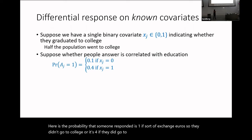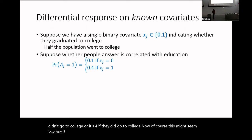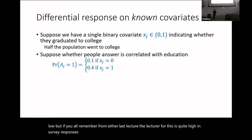Suppose that whether people answered is correlated with education. The probability that someone responded is 0.1 if xj equals 0 — they didn't go to college — or 0.4 if they did go to college. These might seem low, but as you'll recall from earlier lectures, response rates today are in the low single digits.